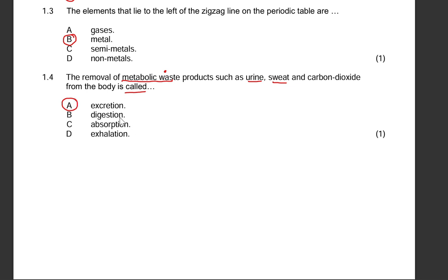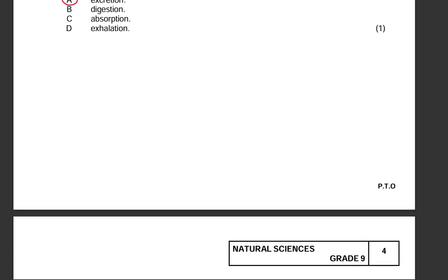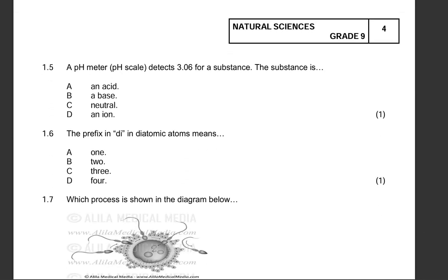Remember guys, you're more than welcome to pause the video and attempt to answer these questions yourself. 1.5: we are talking about a pH meter or a pH scale here. A pH scale detects 3.06 for a substance. The substance is what? Our answer will be A, it is an acid. It is below seven.